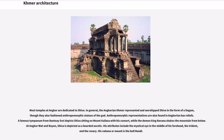Most temples at Angkor are dedicated to Shiva. In general, the Angkorian Khmer represented and worshipped Shiva in the form of a lingam, though they also fashioned anthropomorphic statues of the god. Anthropomorphic representations are also found in Angkorian bas-reliefs. A famous tympanum from Banteay Srei depicts Shiva sitting on Mount Kailasa with his consort, while the demon king Ravana shakes the mountain from below. At Angkor Wat and beyond, Shiva is depicted as a bearded ascetic; his attributes include the mystical eye in the middle of his forehead, the trident, and the rosary. His vahana or mount is the bull Nandi.